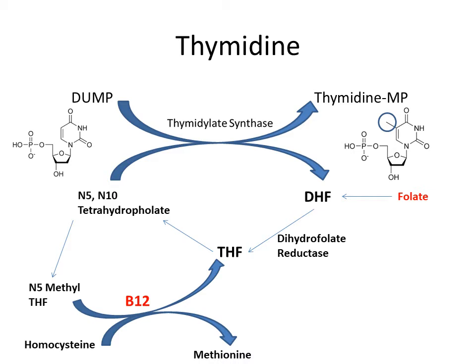If we don't have enough folate, we cannot make dihydrofolate, and therefore we cannot make N5,N10-tetrahydrofolate. Without enough N5,N10-tetrahydrofolate, we cannot carry out thymidine synthesis. If we don't have enough vitamin B12, we cannot convert N5-methyl-tetrahydrofolate into tetrahydrofolate, so the tetrahydrofolate becomes trapped as N5-methyl-tetrahydrofolate. We also cannot convert homocysteine into methionine, leading to high homocysteine levels in the body.